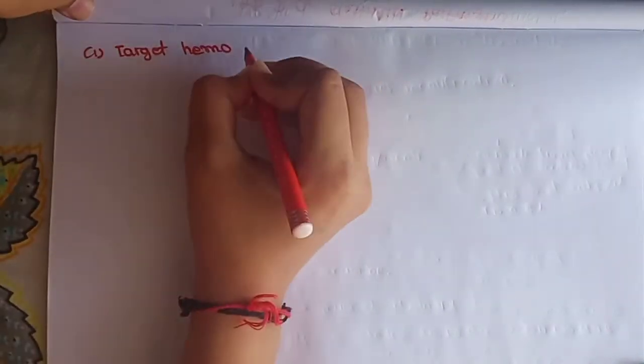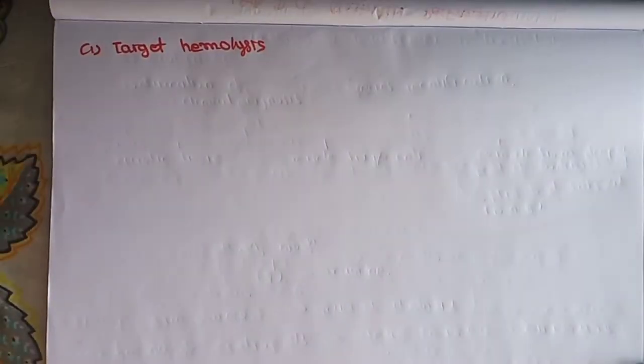These Clostridium perfringens can be further identified by the following property. Culture plate should be incubated anaerobically at 37 degrees for two days. Let's talk about in detail.